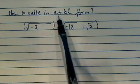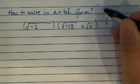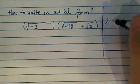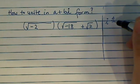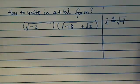How to write this expression into a plus bi form. Now i, by definition - this is something someone just made up basically - by definition is equal to the square root of minus 1.